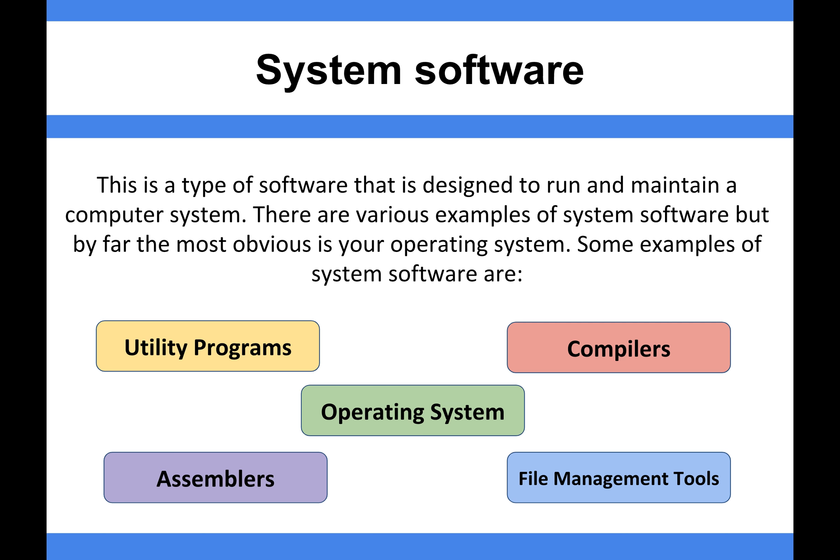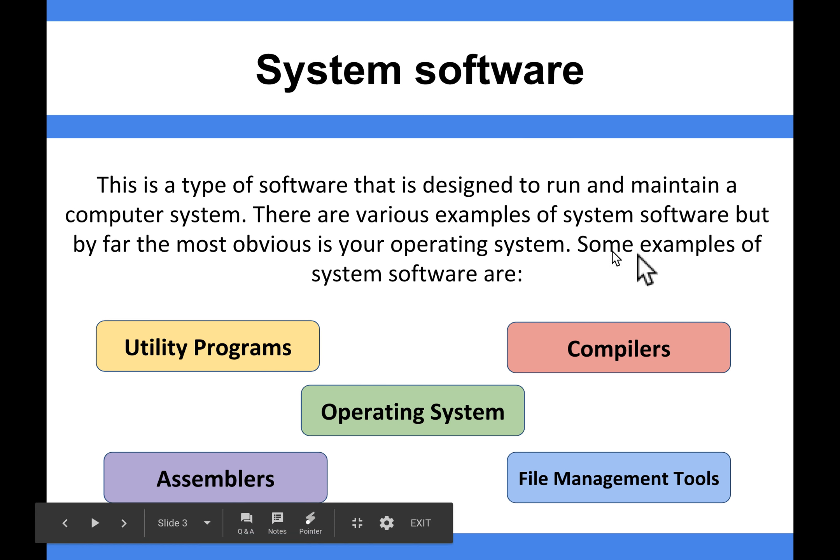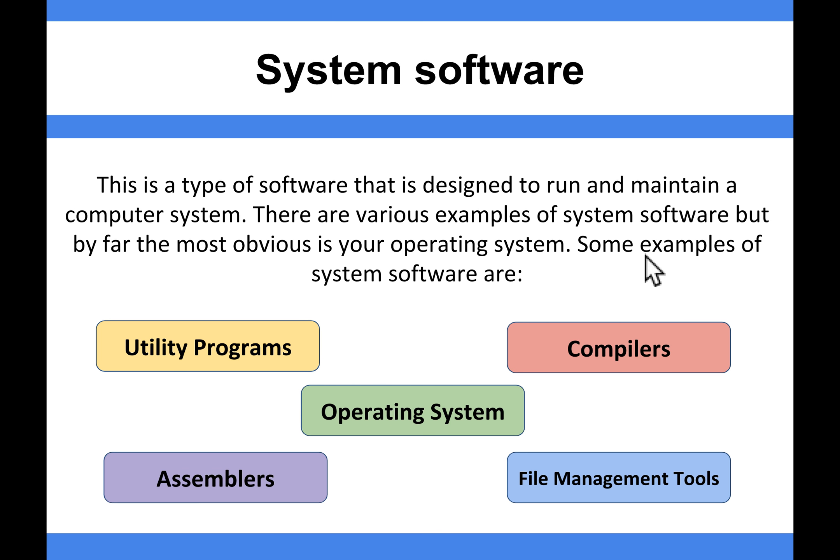Your operating system is the biggest piece of system software, but there are others you'll learn about further into computer science — things like compilers, file management tools, assemblers, and utility programs, just to name a few. But by far the easiest example of system software is your operating system.